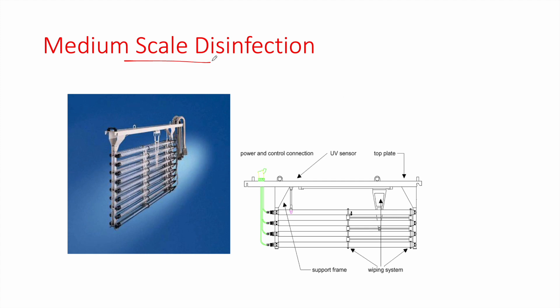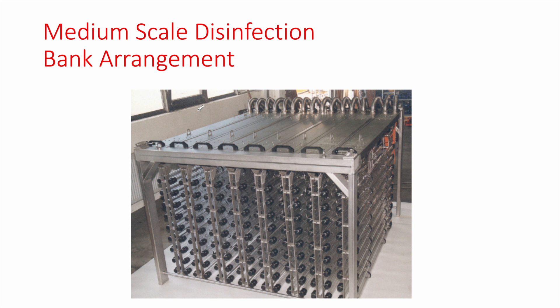For medium scale disinfection projects, a series of UV lamps can be placed in parallel in a horizontal configuration within a channel, and the wastewater flows through and comes in contact with the UV lamps to be disinfected. For larger projects, a bank arrangement can be used with multiple UV lights placed in a channel so the wastewater flows and comes in contact with the lights for disinfection.